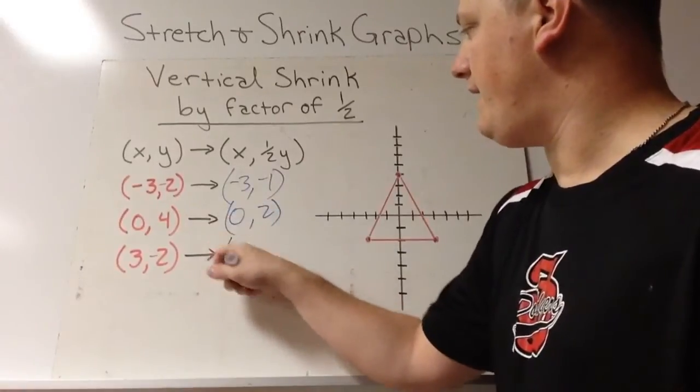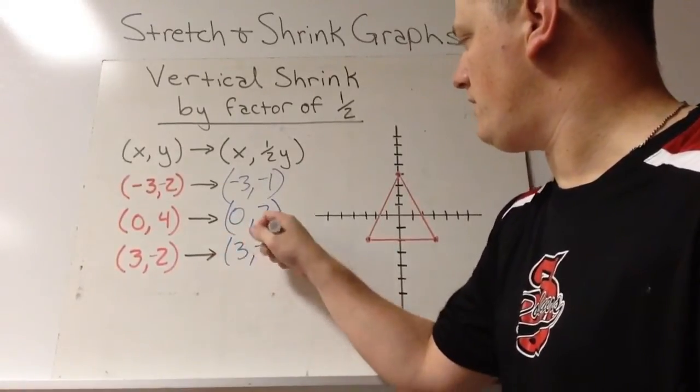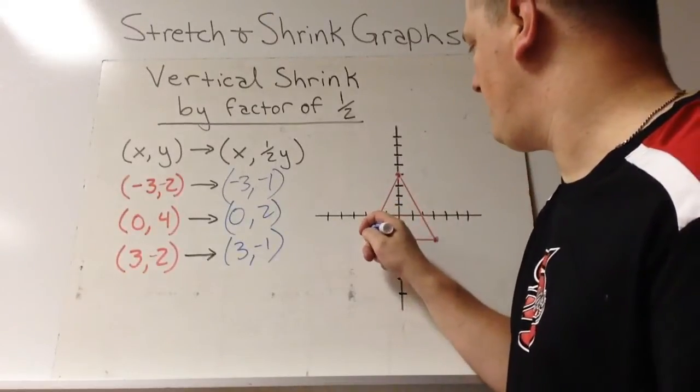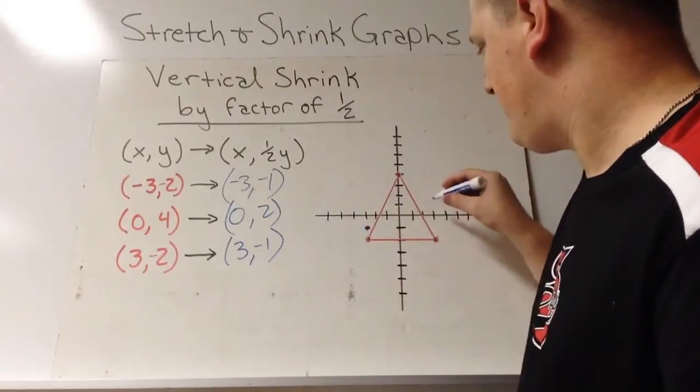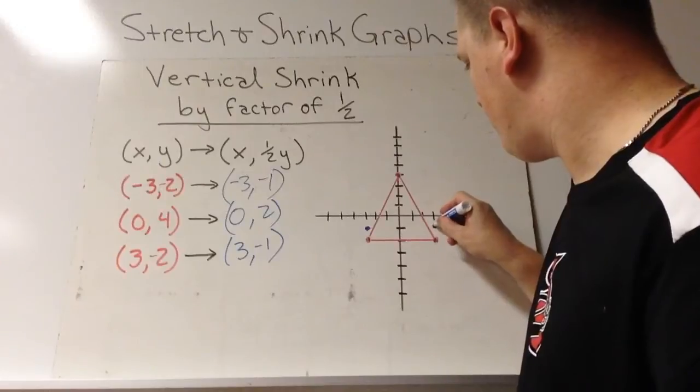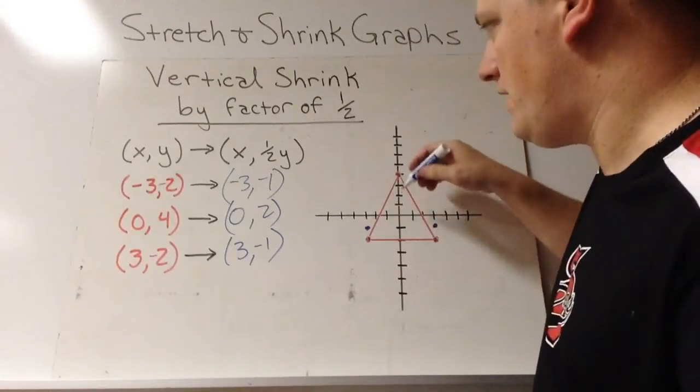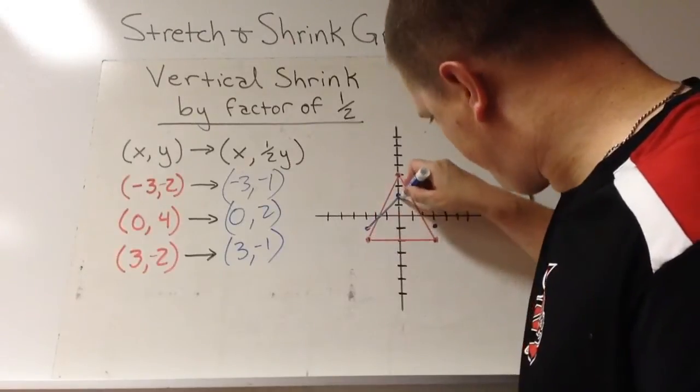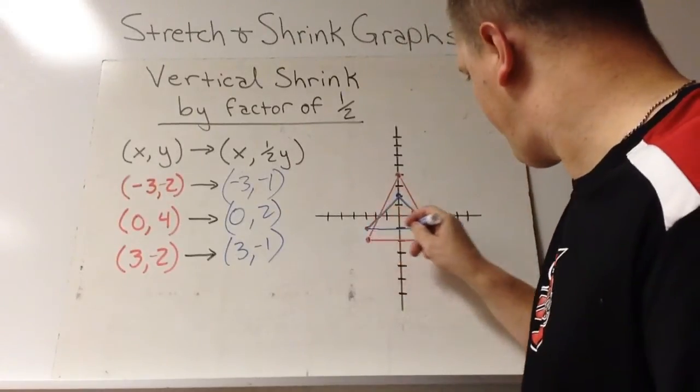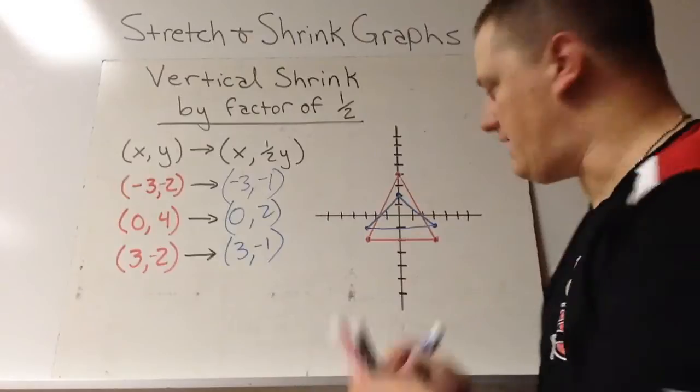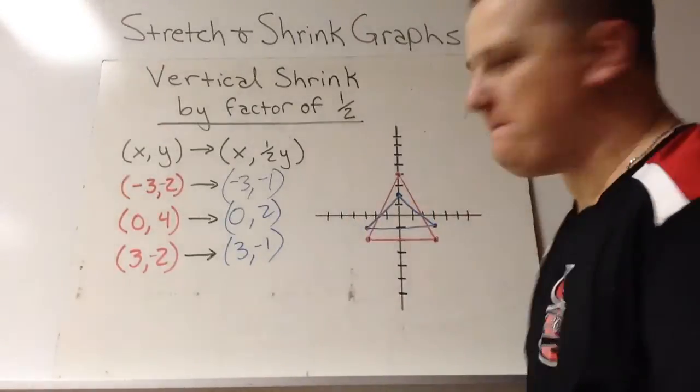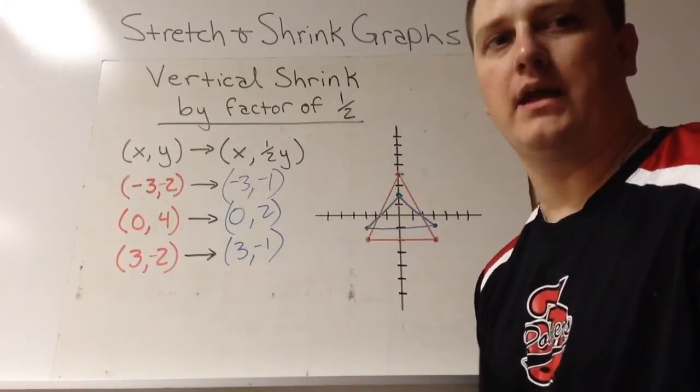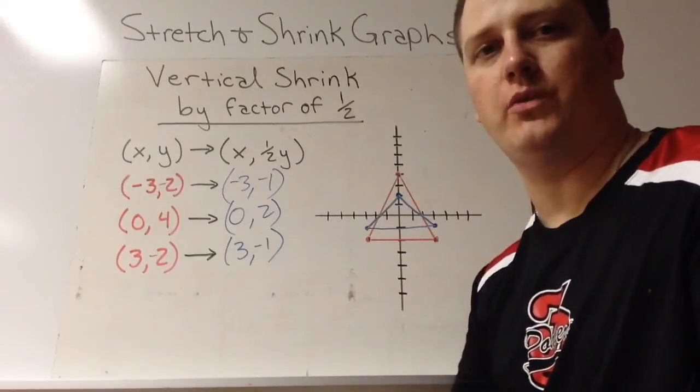and 3, negative 1. So negative 1 for each of those, and 0, 2. So if you notice, again, the width has stayed the same. We have just shrunk the height of the object. Now we want to look at how this works within graphs.